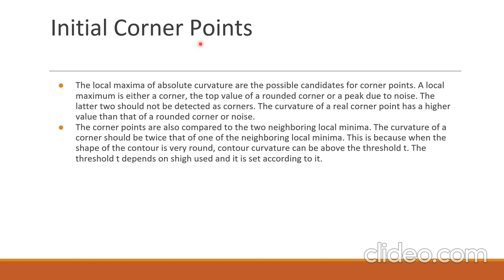Using the edge extraction image and the algorithm for finding the absolute value of curvature, we start with a large scale where a high sigma value is selected and find the absolute values of curvature at the edge contours. Local maxima of absolute curvature are the possible candidates for corner points — a local maximum might be a real corner, or due to a rounded corner, or due to noise. These will be our initial corner points, and we need to eliminate rounded corners and corners due to noise.